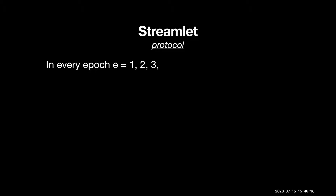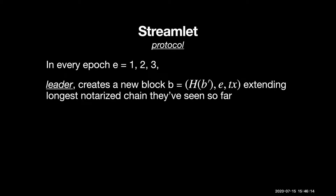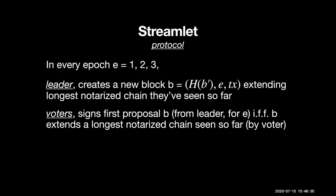The protocol is fairly straightforward. In each epoch, the leader creates a new block with the hash of the parent block, the epoch number, and extends the longest notarized chain that leader has seen so far. It sends this block to all nodes. Nodes sign the first proposal they receive in a particular epoch if and only if the block extends the longest notarized chain they have seen so far.